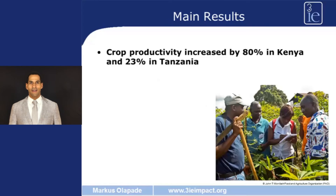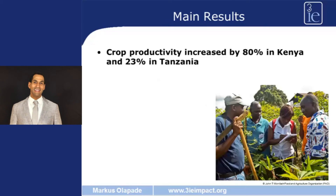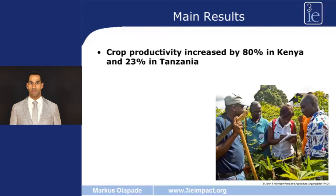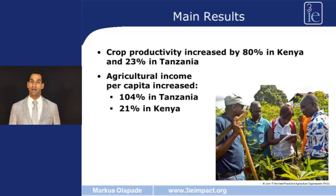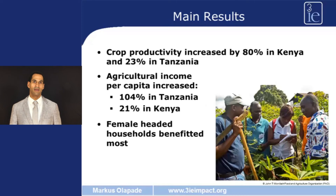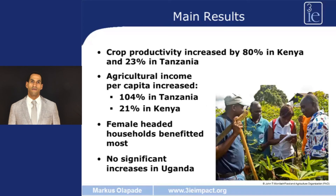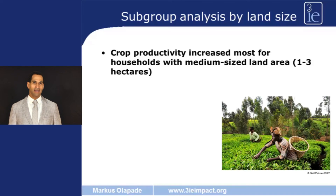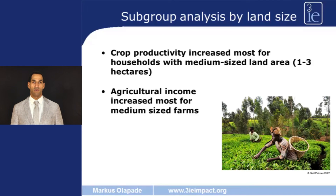Turning to the main results: the average treatment effect on the treated shows an 80% increase in Kenya and a 23% increase in Tanzania in crop productivity. This means that in Kenya crop productivity increased from 7,000 to 13,000 shillings per acre, and in Tanzania from 113,000 to 138,000 shillings per acre. Agricultural income also increased — it doubled in Tanzania and increased by 21% in Kenya. We also observe that women benefited more than men from the farmer field schools. For Uganda there is no significant impact reported. Subgroup analysis by land size shows that crop productivity and agricultural income increased most for medium-sized land holdings.